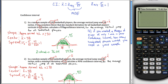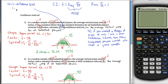The first thing you need to do is figure out what alpha is. You can figure out alpha if you know that alpha is always 1 minus your confidence level. So since our confidence level is 95% in this specific problem, we get that alpha is equal to 0.05.